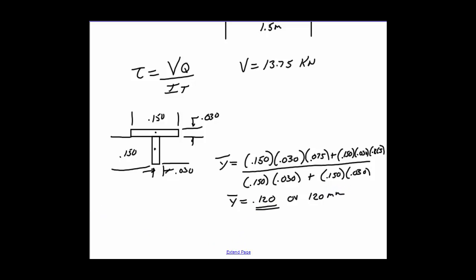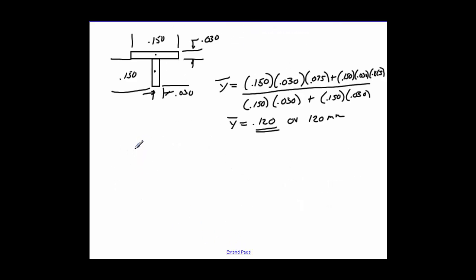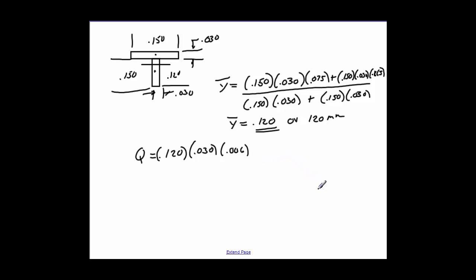Now we need to find Q. Since we know the centroid is at 0.120 m, it's easier to take the area below the centroid as one piece. Q equals 0.120 times 0.030 — that's the area — times the distance from the centroid to its center, which is 0.060. This gives Q = 2.16 times 10 to the minus 5 cubic meters.